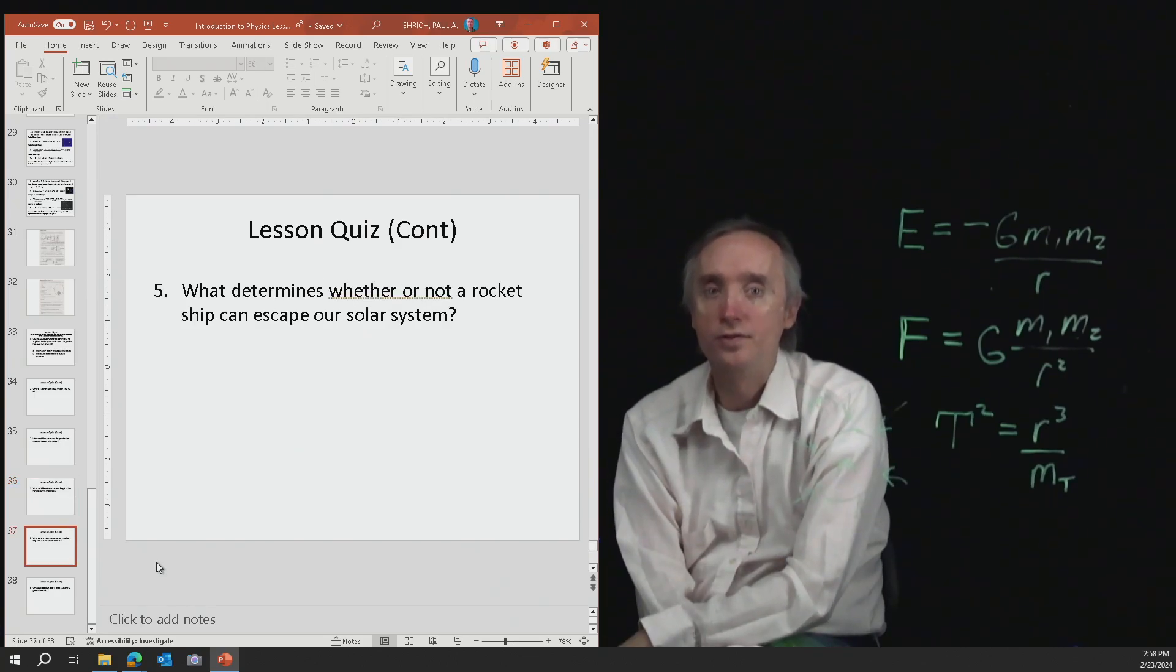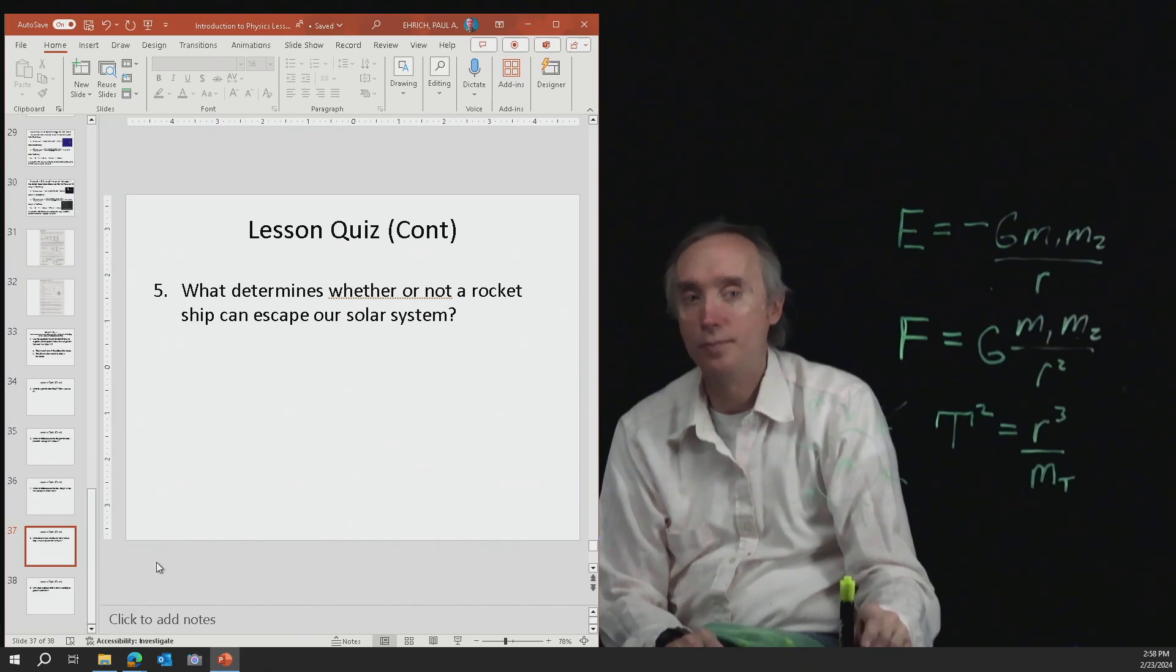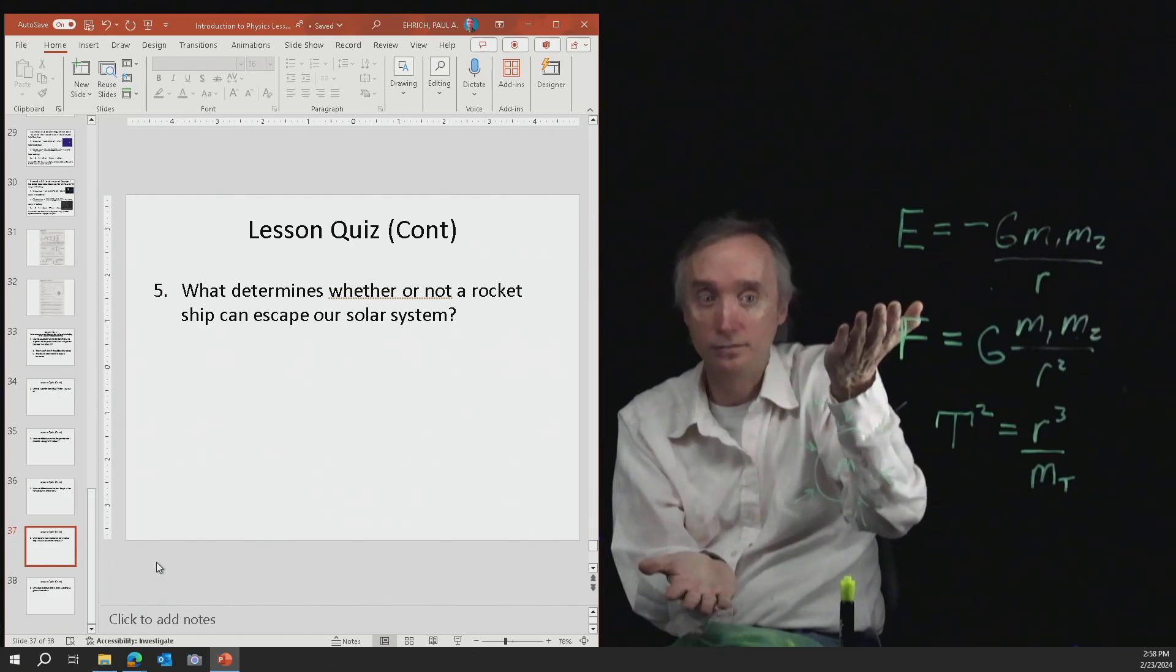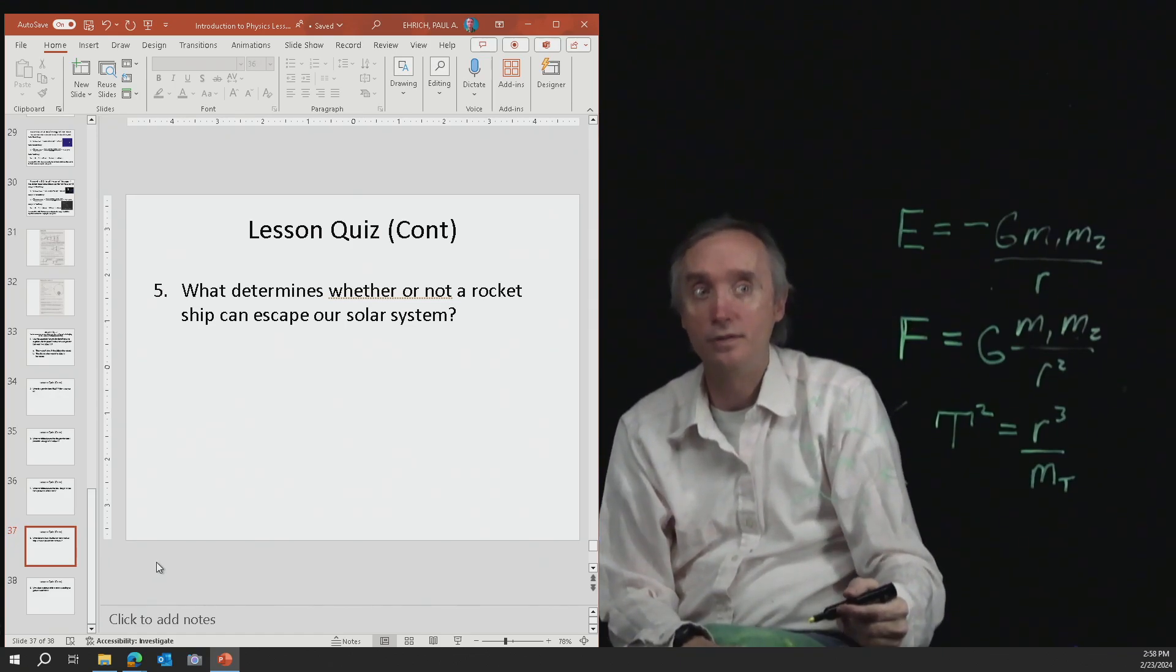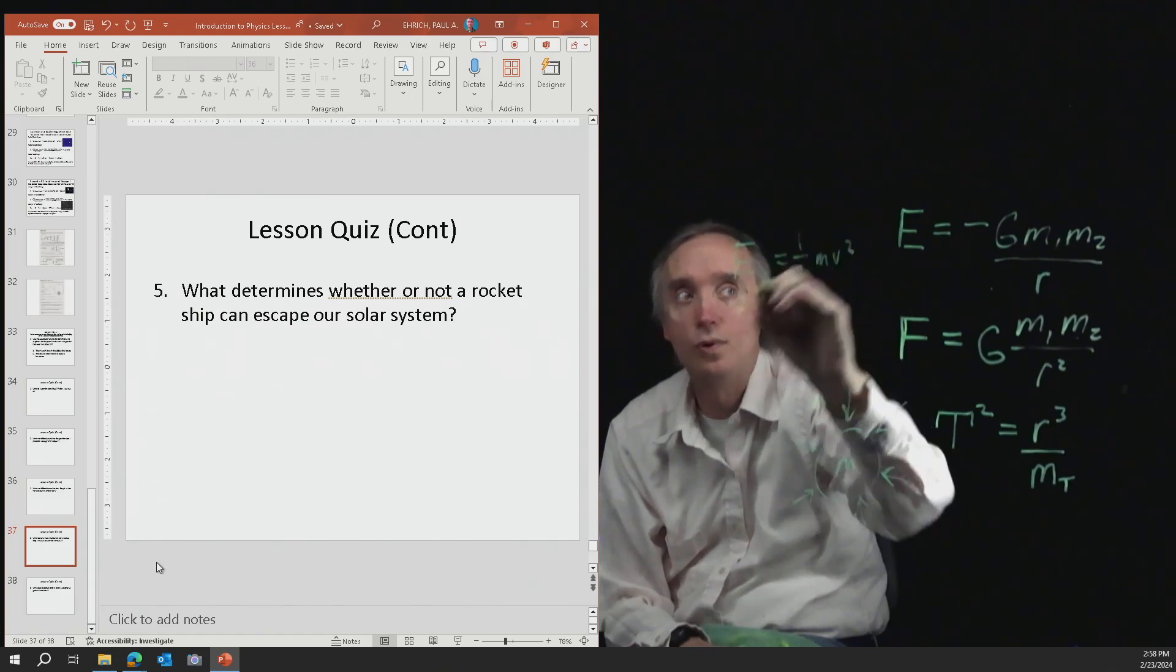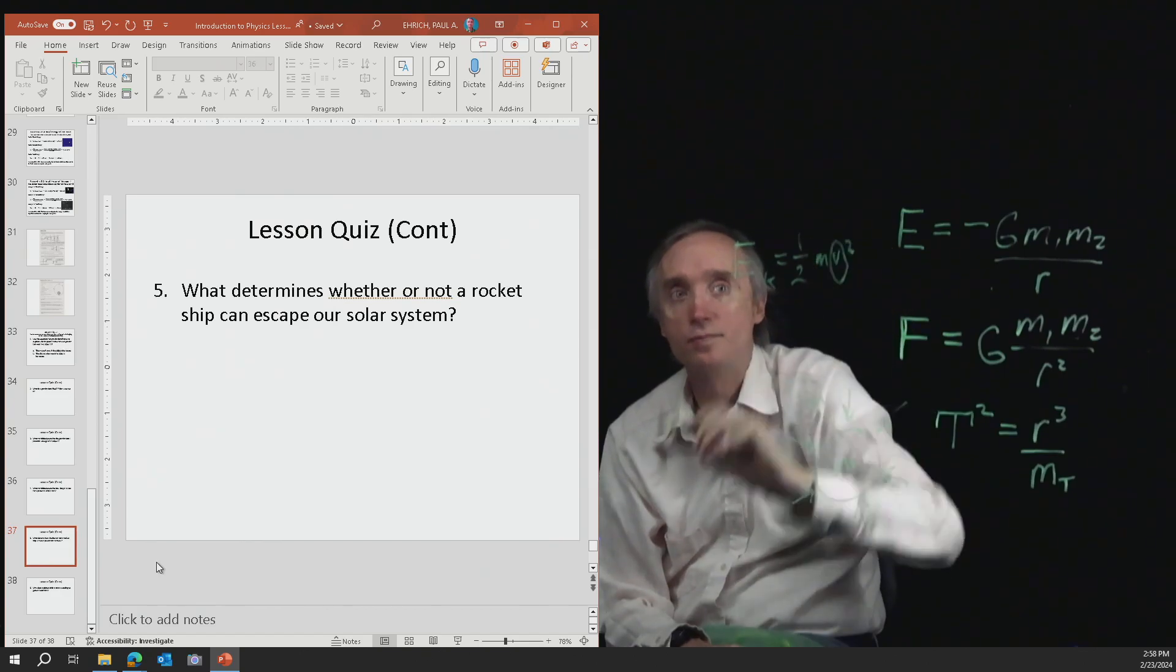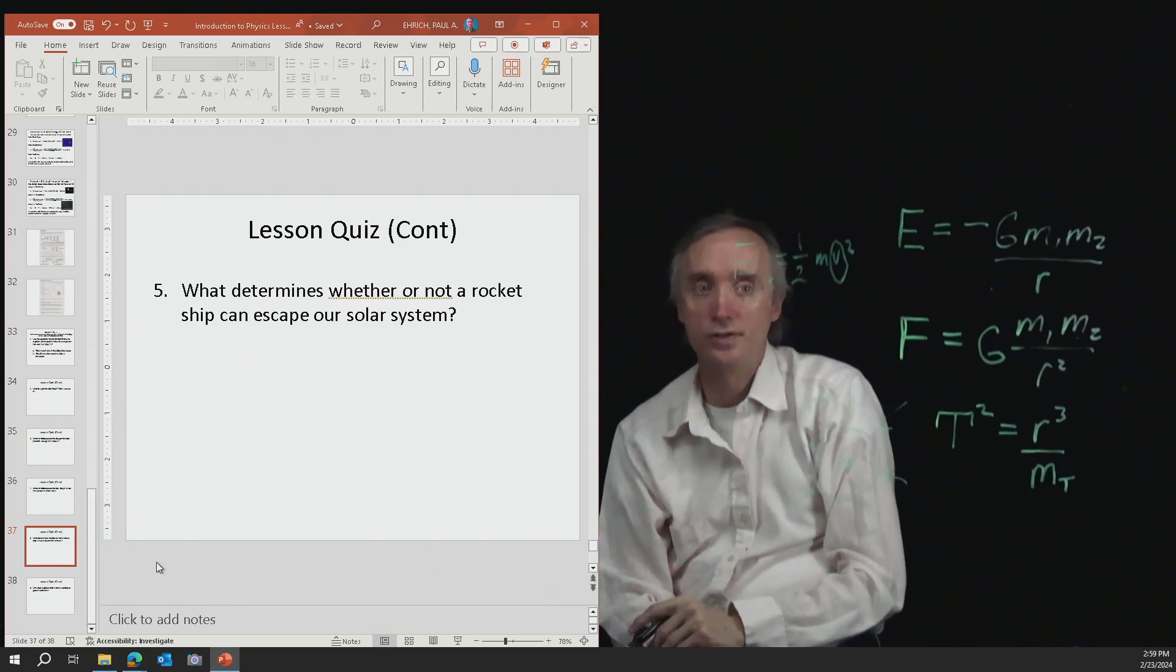Number five, what determines whether or not a rocket ship can escape our solar system? So it all comes down to a competition between kinetic energy and gravity. So the kinetic energy is going to depend on speed. So energy kinetic is one half mv squared. So it's going to depend on the speed. This is going to determine how big the kinetic energy is going to be.